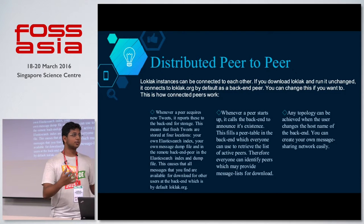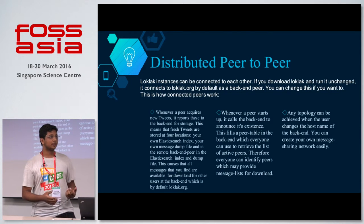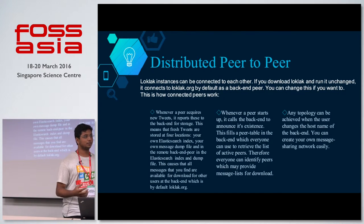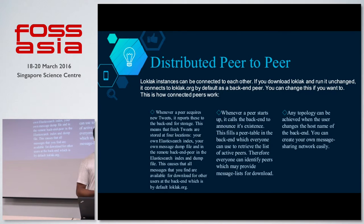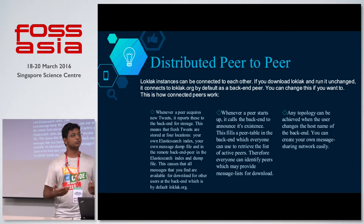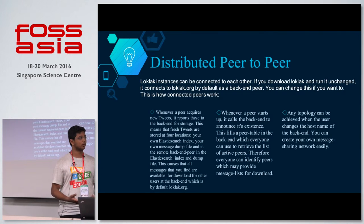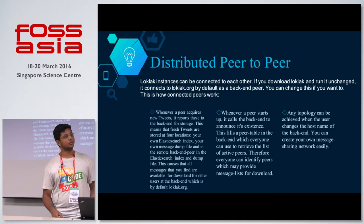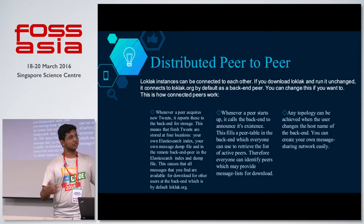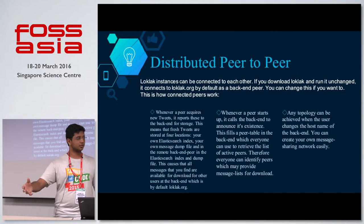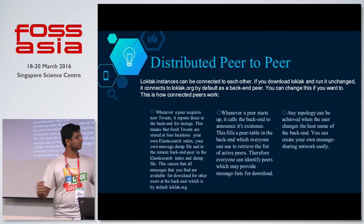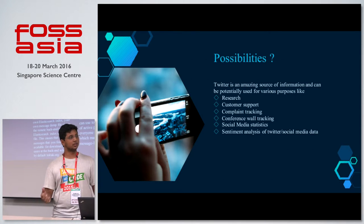It has distributed peer-to-peer architecture, which means anywhere in the world people can put that up. Twitter also has rate limiting — if you request Twitter too many times, they block you for around one hour. With LoClack, that does not happen because of the distributed architecture. If one of the servers has the tweet, it will automatically start sharing the tweets among the servers.